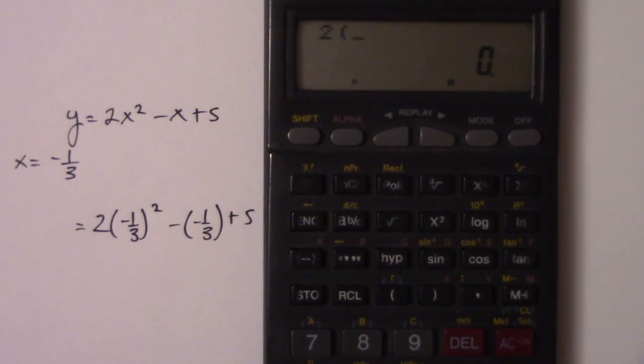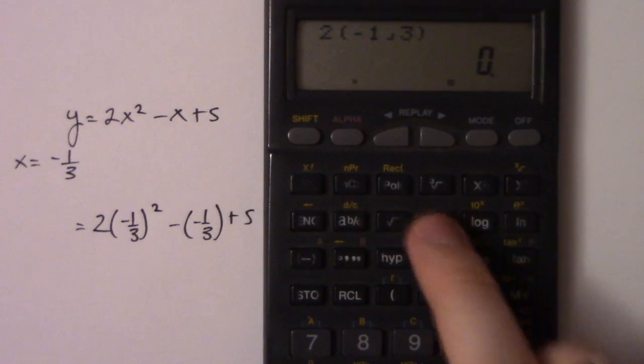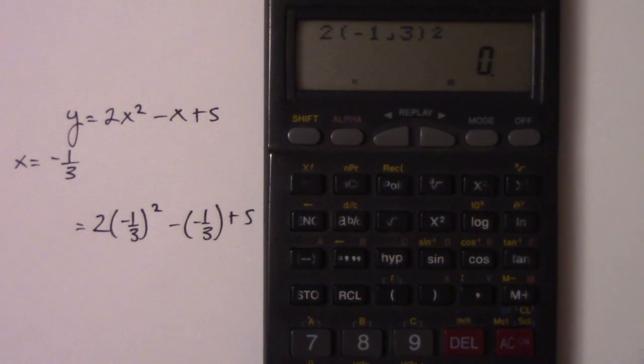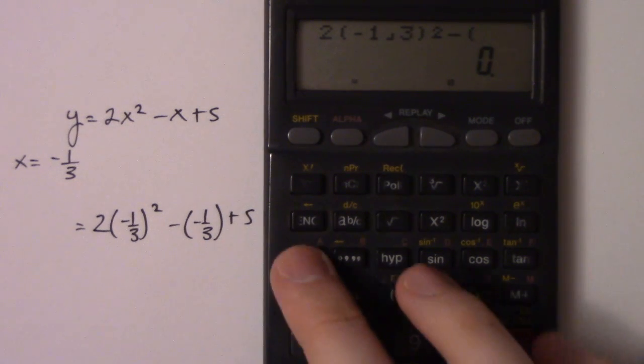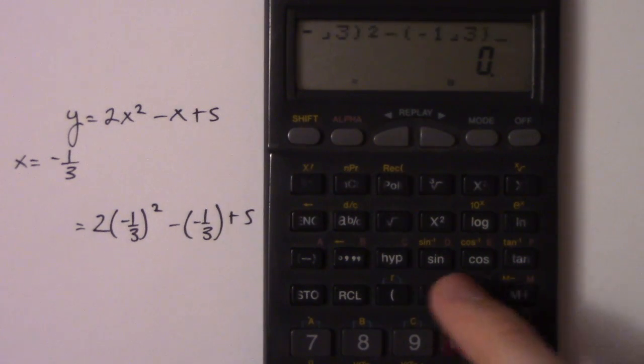So I can easily put this in here with my fraction button. I can go negative 1 over 3, squared, minus—and I like to use a lot of brackets. I'm a bracket guy.